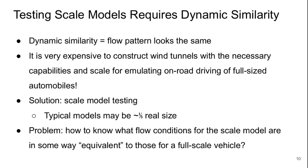If we want to be able to test scale models, we need something called dynamic similarity. Dynamic similarity means that the flow pattern looks the same. It's very expensive to construct wind tunnels that have the capabilities at the size scale to test full-sized cars. The solution to this is scale model testing. The typical models will normally be about one-fifth, maybe, of real size for cars. The problem here is how do we know what flow conditions for the scale model are in some way equivalent to those for the full scale vehicle?